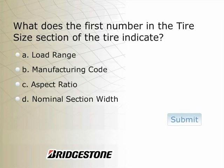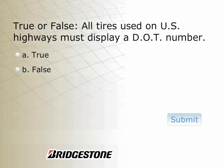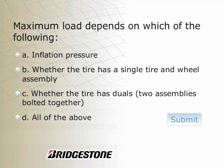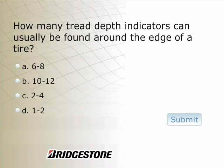Number one: What does the first number in the tire size section of the tire indicate? Number two: True or false — all tires used on U.S. highways must display a DOT number. Number three: Why is manufacturing date important in regard to tire safety? Number four: Maximum load depends on which of the following? Number five: How many tread depth indicators can usually be found around the edge of a tire?